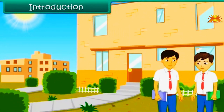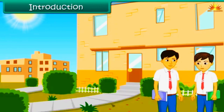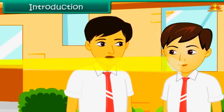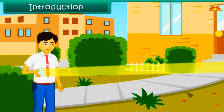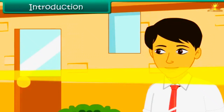It is recess time at school. You and your friends are out in the lawns. Suddenly a bright light hits you in the eye. You and your friends move to a different location. This time the bright light hits your friend. The bright light seems to be following you. You are confused.